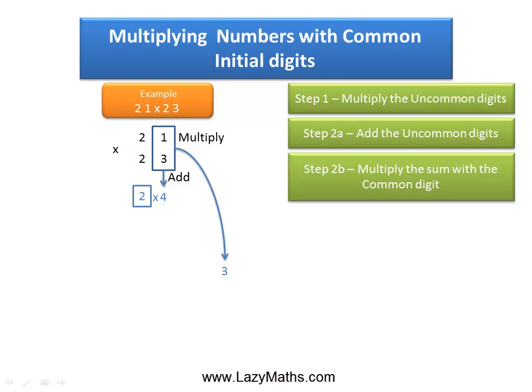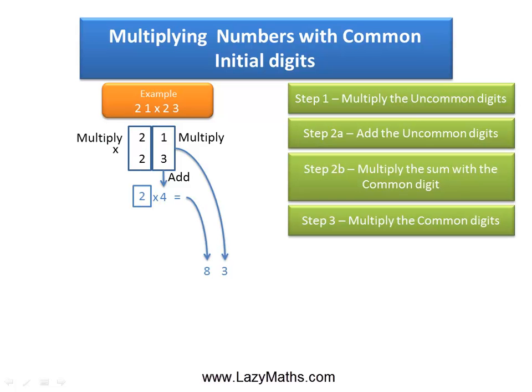So we multiply 2 times 4 and we get an 8, and then finally we simply multiply the common digits, 2 times 2 and we get a 4.